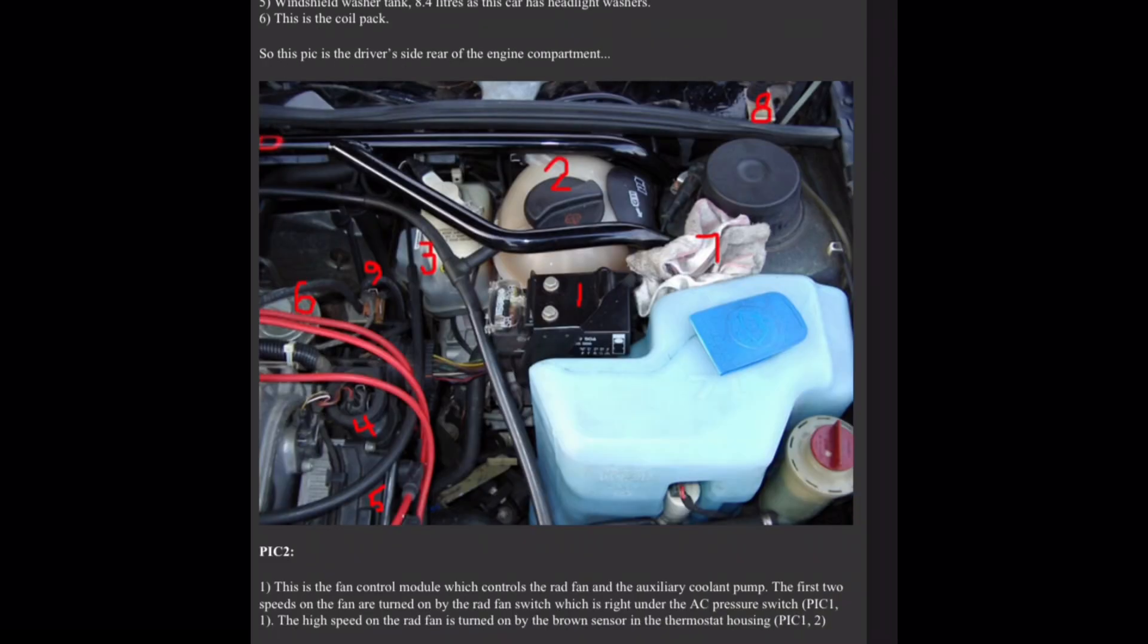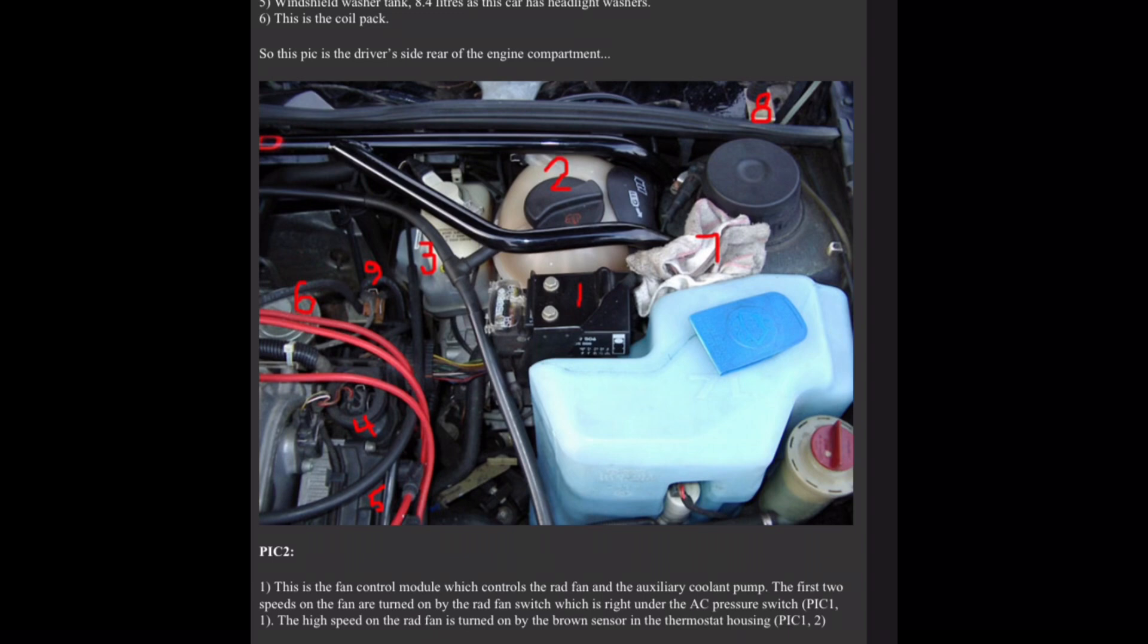One, this is the fan control module which controls the rad fan and the auxiliary coolant pump. The first two speeds on the fan are turned on by the rad fan switch, which is right under the AC pressure switch, pick one, one. The high speed on the rad fan is turned on by the brown sensor in the thermostat housing, pick two, one.